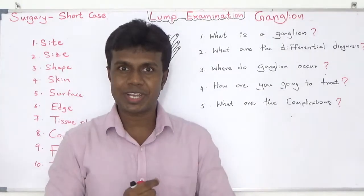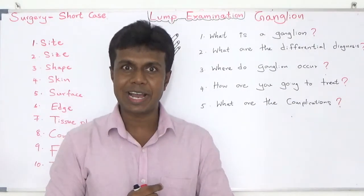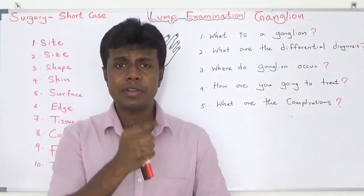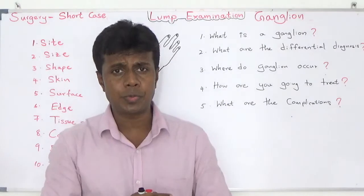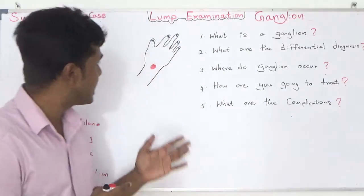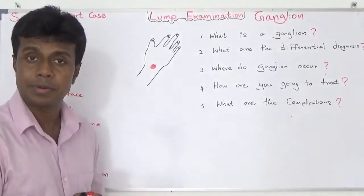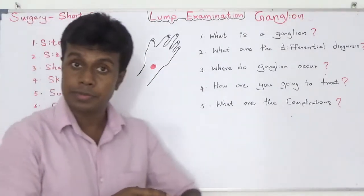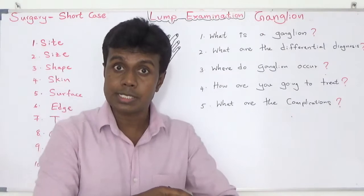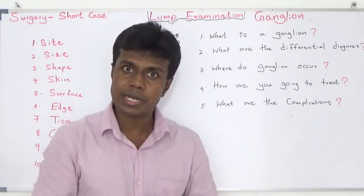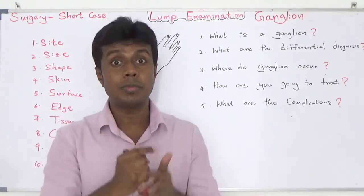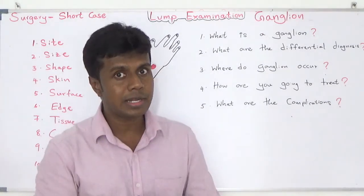Surgery short case: Ganglion. The examiner will ask you to examine this lump. There is a lump on the dorsal aspect of your patient's hand. Most probably it can be a ganglion.